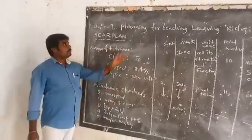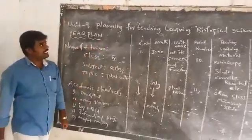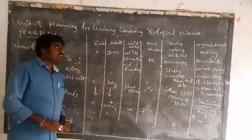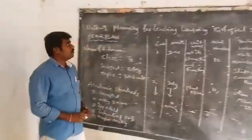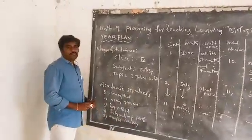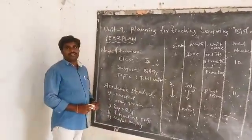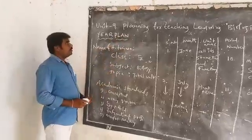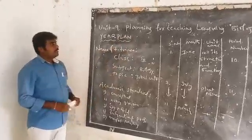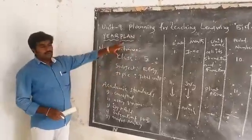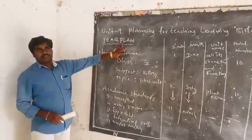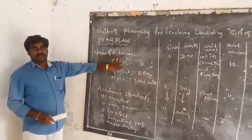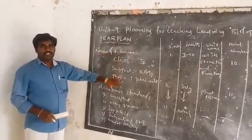Unit 9: Planning for Teaching Learning Biological Science — Jeeva Shastra Bodhana Pranalika. The three types of plans we will cover are: Year Plan, Lesson Plan, and Period Plan.